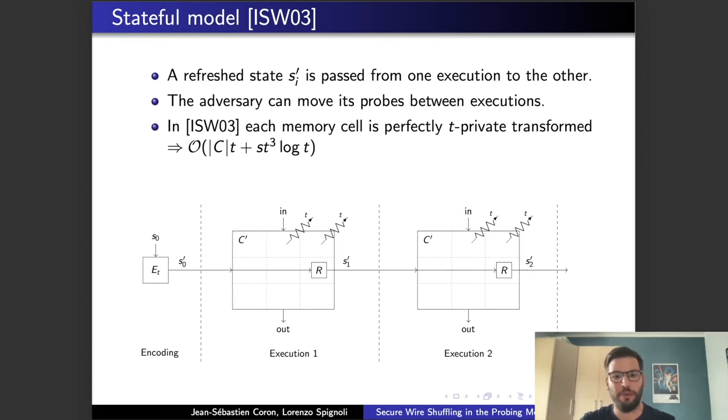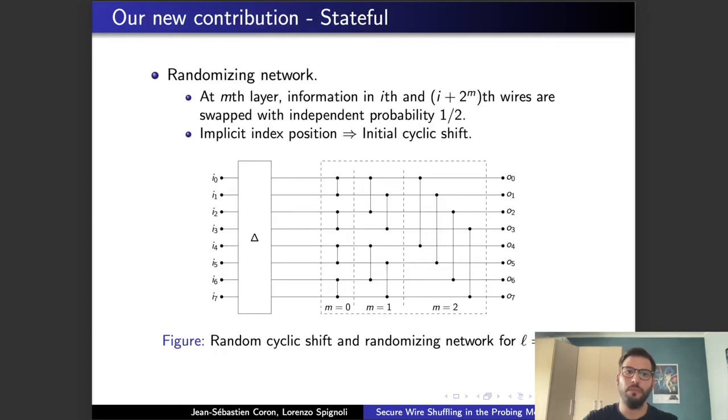In ISW03 each memory cell is simply perfectly T-private transformed with the classical perfect secure countermeasure with the number of shares 2T plus 1. So that makes the overall cost of the circuit O(T^3 log T) times the number of the memory cells.